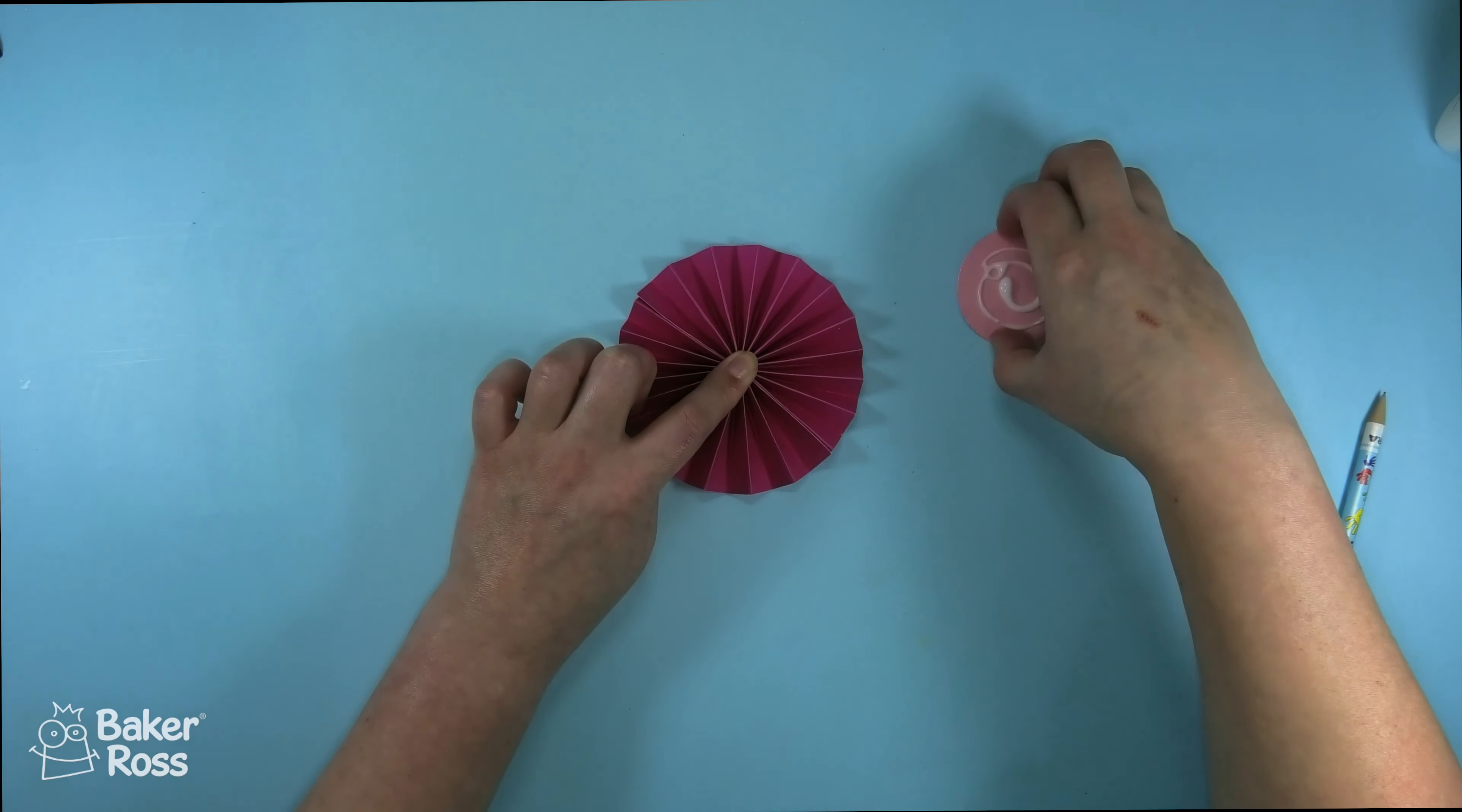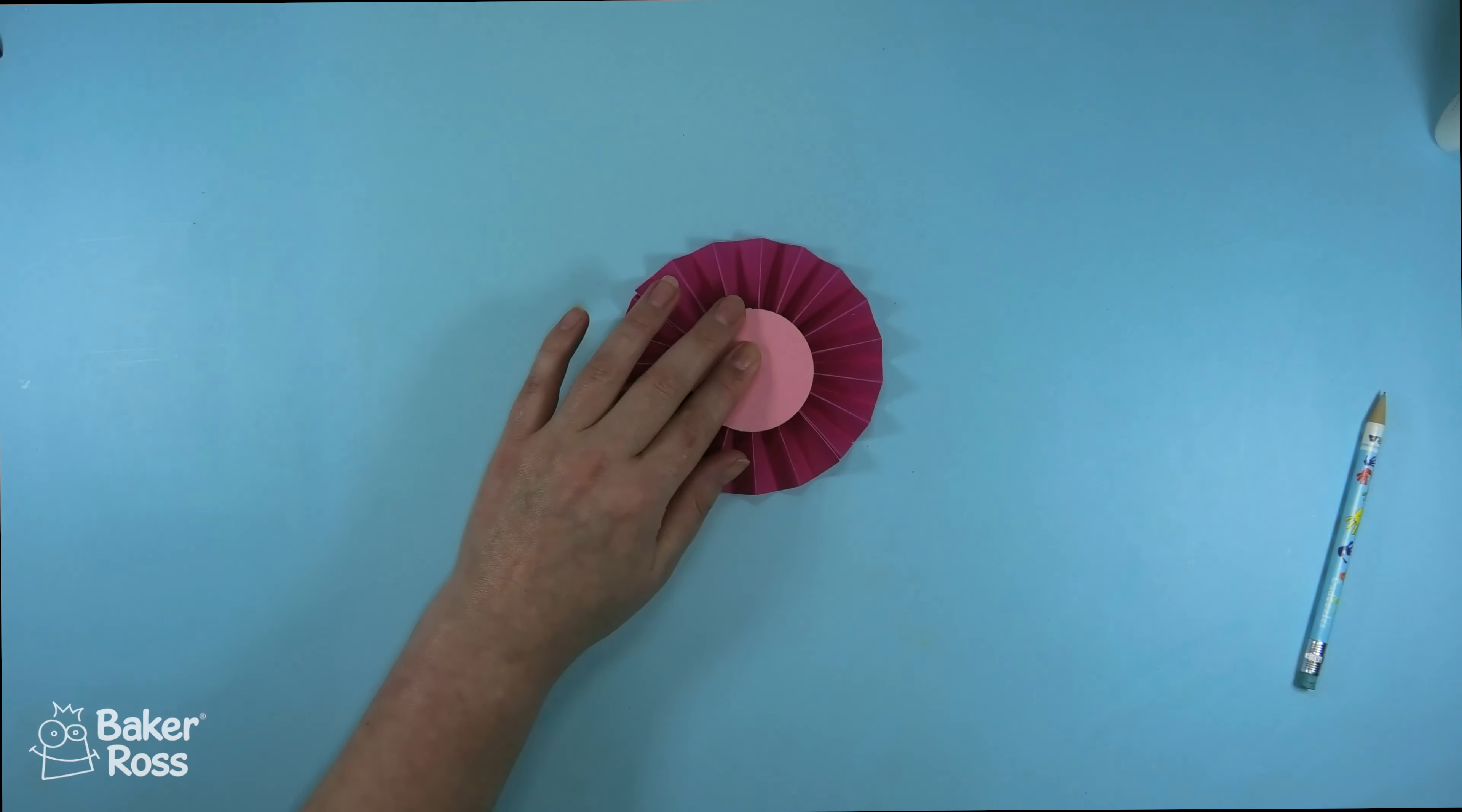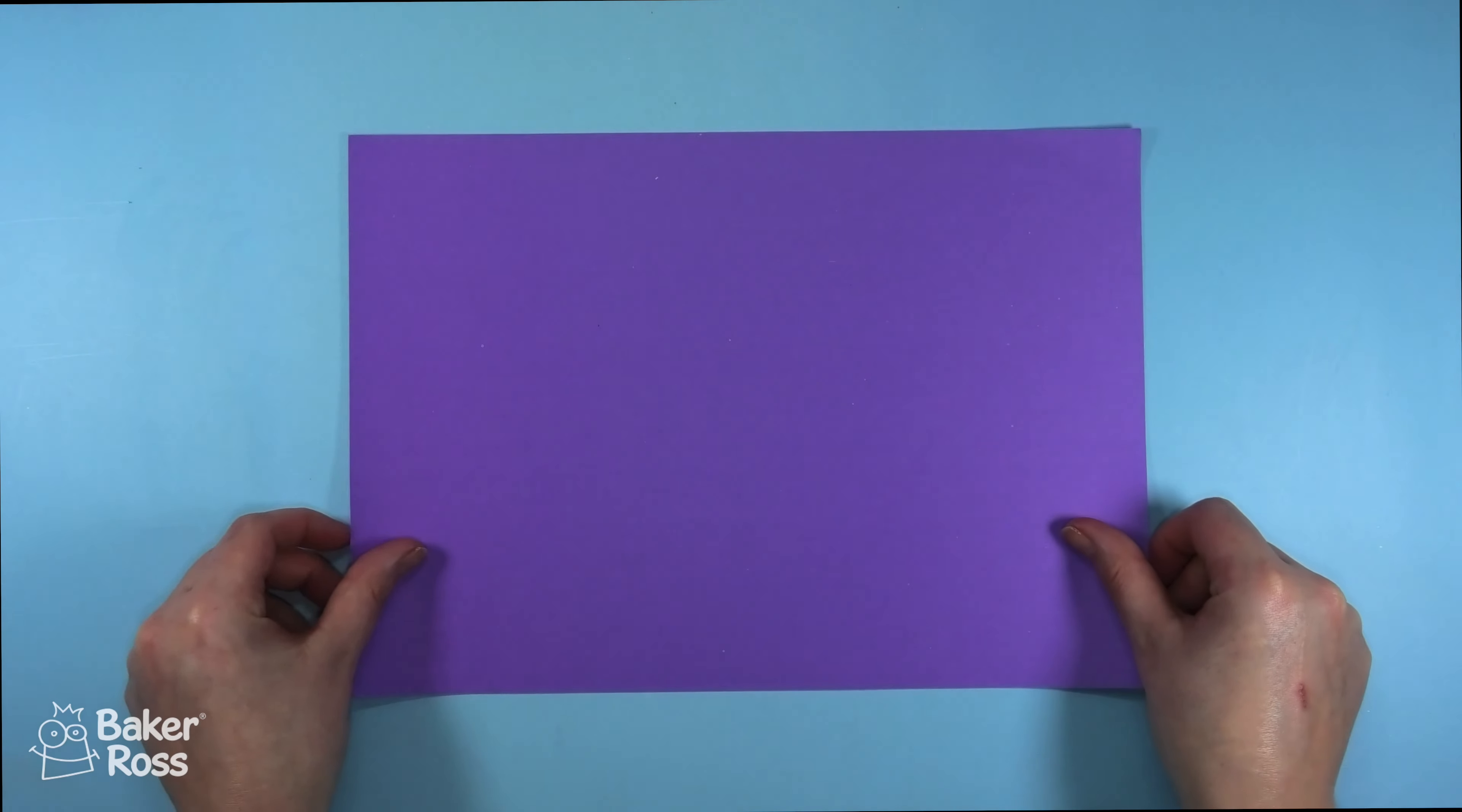As you can see I'm using PVA glue to attach the smaller circles to the center of the rosette and this will hold everything in place and I'm just adding a small bottle of paint as a weight to hold that together while it dries.